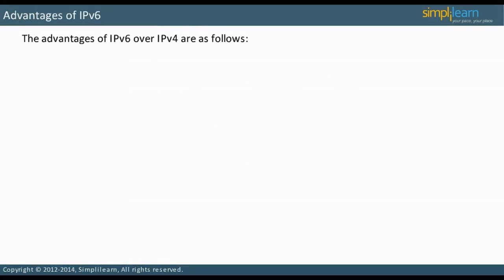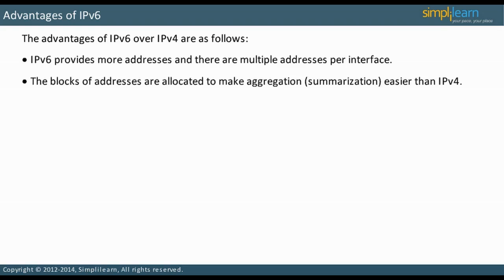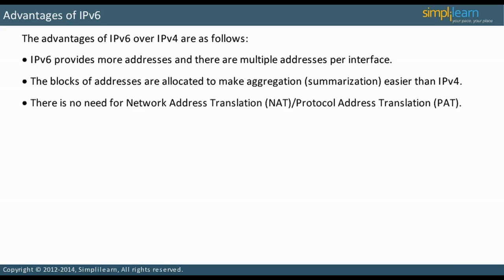IPv6 provides 3.4 times 10 to the 38th power addresses versus the 4.3 billion addresses provided by IPv4. The increase in the number of addresses is the biggest benefit of IPv6. In fact, in IPv6 there are multiple addresses per interface. The blocks of IPv6 addresses are allocated to make aggregation easier than IPv4. There is no need for Network Address Translation, NAT, or Protocol Address Translation, PAT.